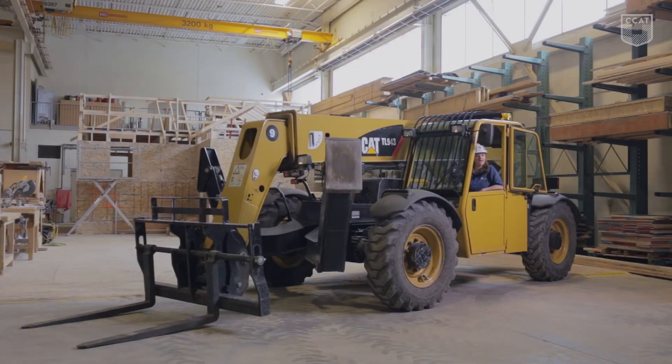I'm sitting in a Caterpillar TL943. This machine weighs approximately 27,000 pounds, can lift 9,000 pounds, and has a reach of 43 feet.